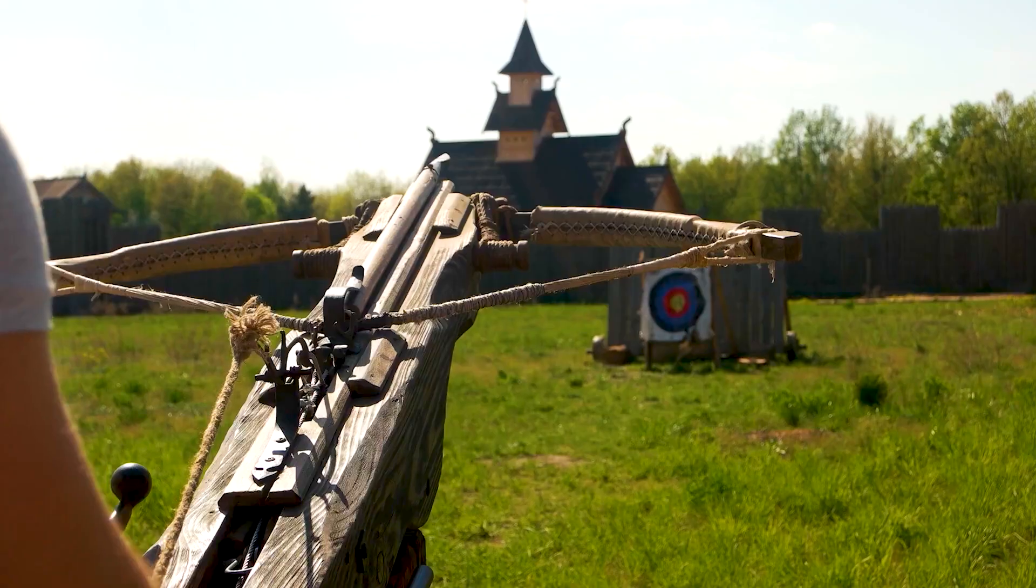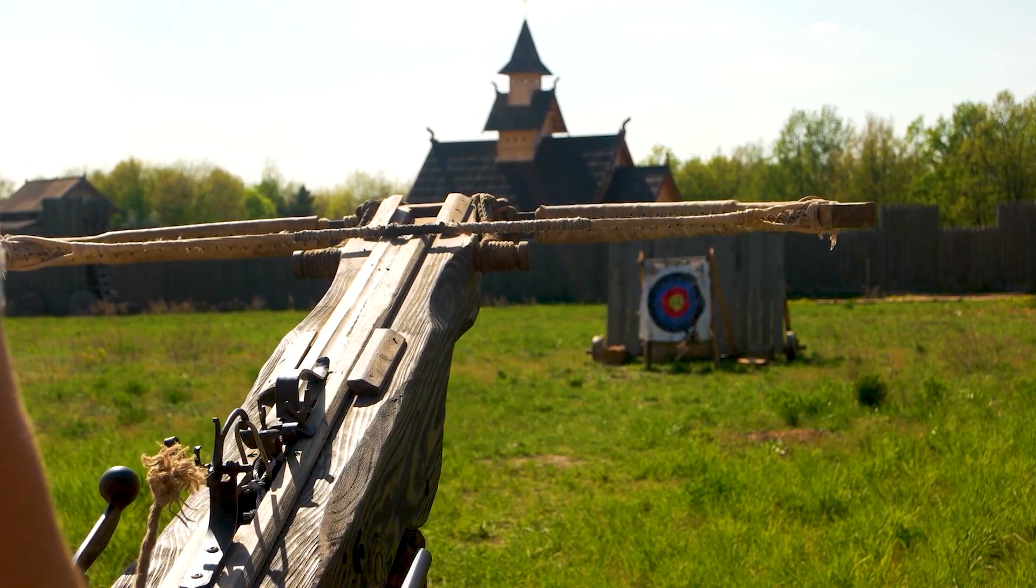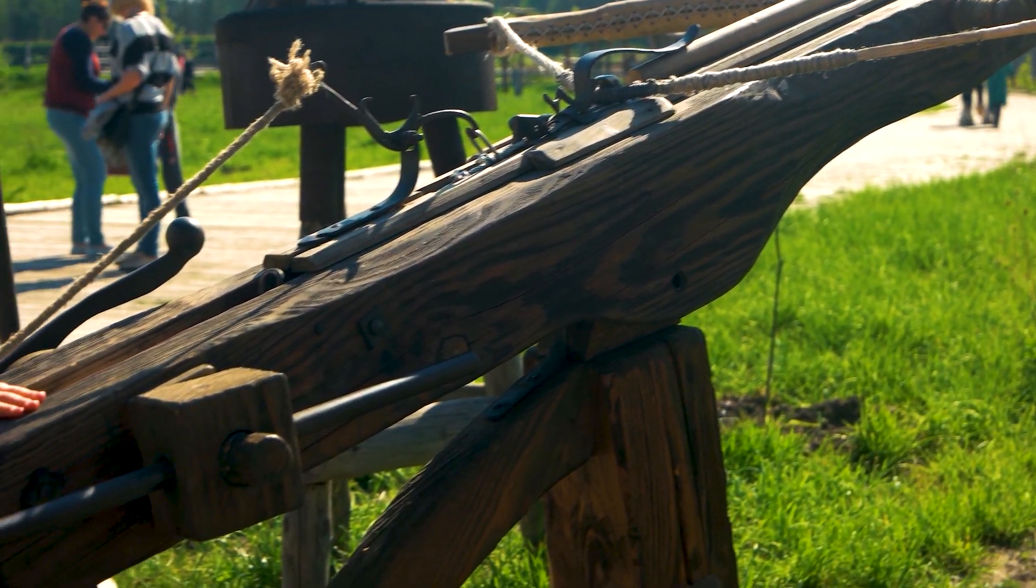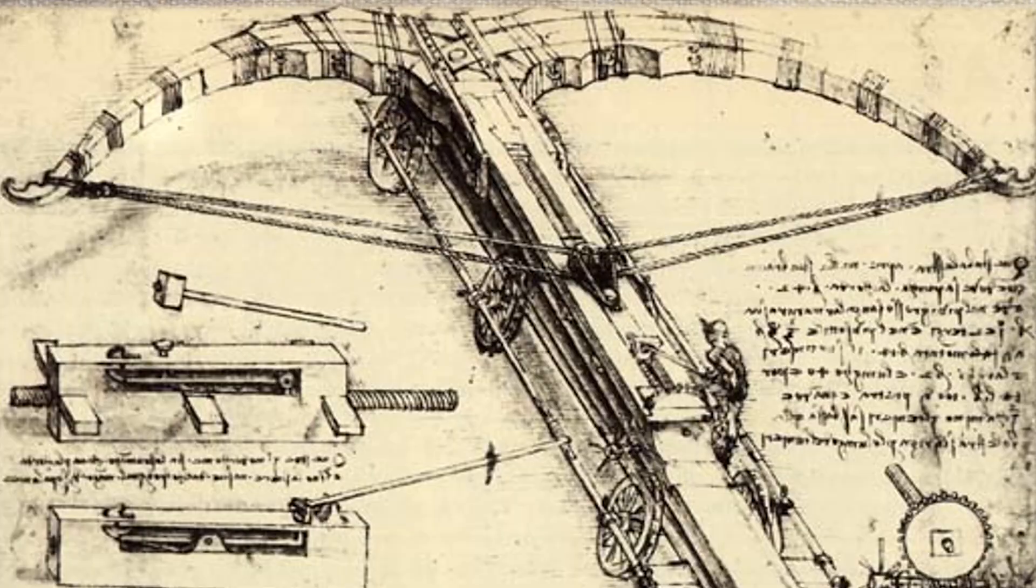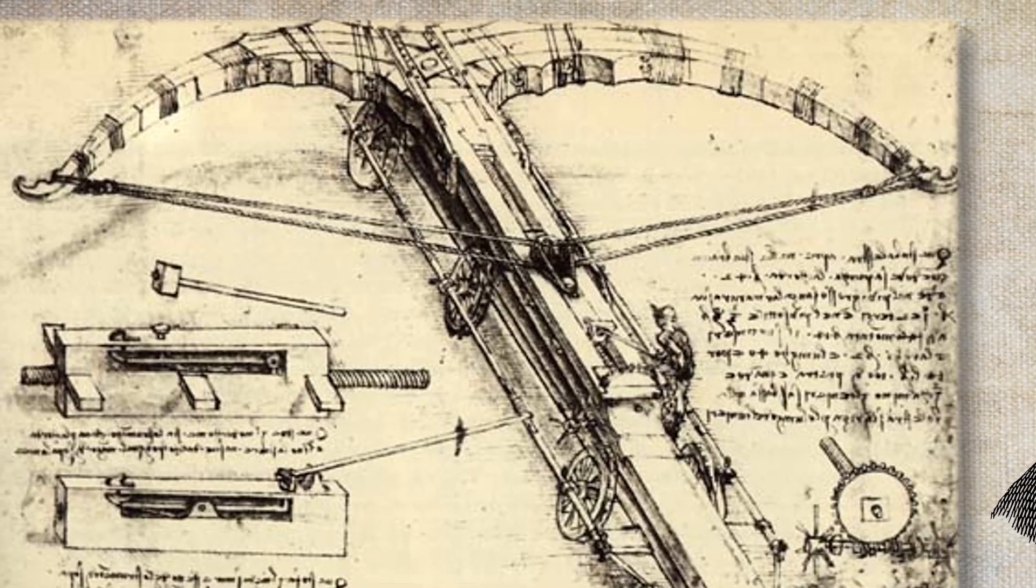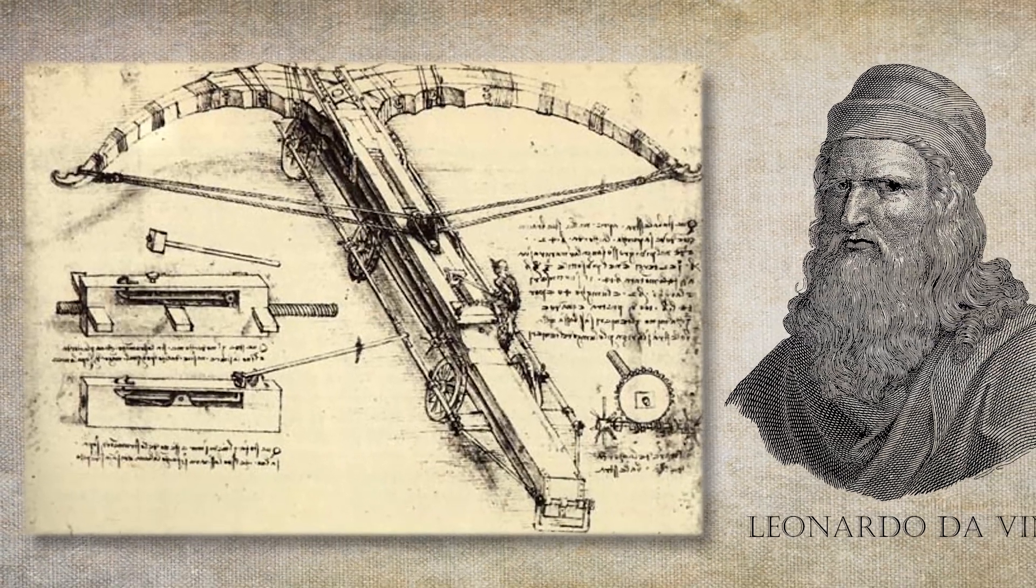Crossbows are essentially horizontally oriented bows with strings that are released by an actual trigger. This picture shows a famous drawing of a giant crossbow designed by Leonardo da Vinci.